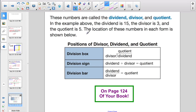The location of these numbers in each form is shown straight off of page 124 of your book. If you're using the division box, dividend, divisor, quotient, 15 divided by 3 equals 5. If you're using a division sign, 15 divided by 3 equals 5. Or, if you're using the division bar, 15 divided by 3 equals 5. Again, they are straight off of page 124 of your book, which you're definitely going to want to have open to that page during the Socrative quiz.